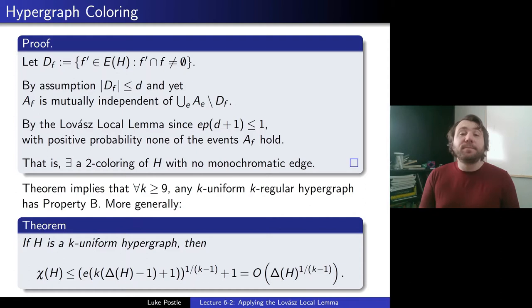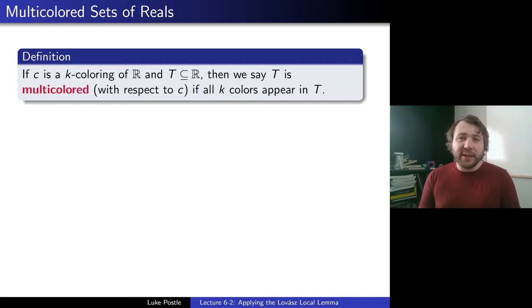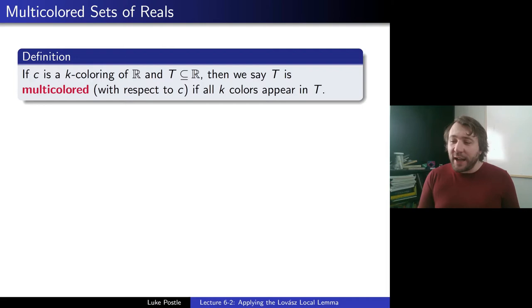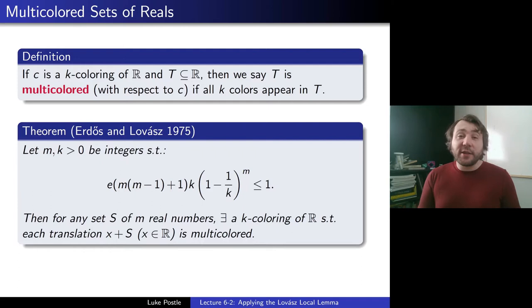So on to our next topic, which is a little more involved: multicolored sets of reals. If c is a k-coloring of the real numbers R and T is a subset of R, then we say T is multicolored with respect to c if all k colors appear in T. So this is a bit different in flavor. Instead of trying to get a coloring avoiding monochromatic edges, you might instead want those edges to be multicolored — more rainbow — ensuring all colors really appear in a set. There's a nice theorem of Erdős and Lovász from the original paper introducing the Lovász Local Lemma.